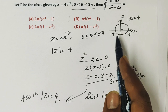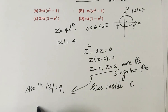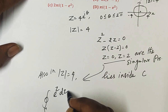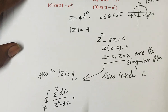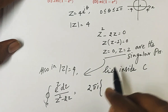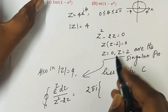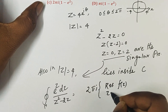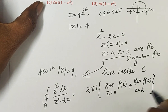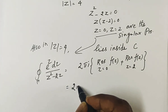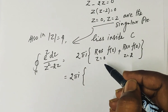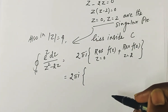Both z = 0 and z = 2 lie inside the circle |z| = 4. These are simple poles (poles of order 1). By the residue theorem, the integral equals 2πi times the sum of residues at z = 0 and z = 2.